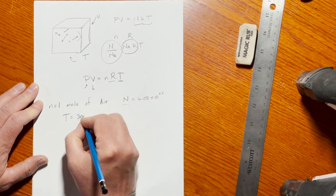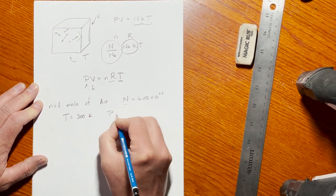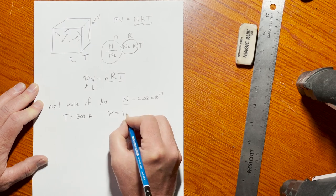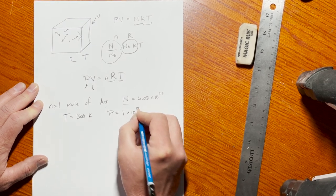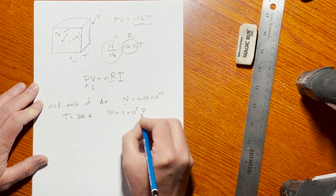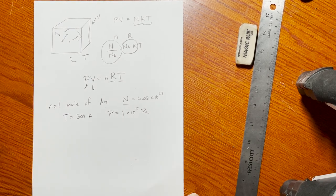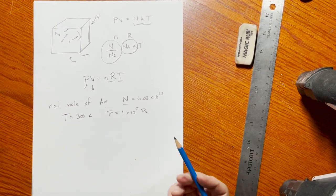And room pressure, we'll call that one pascal—which is 1 times 10^5—sorry, one atmosphere, which is 1 times 10^5 pascals. The question is, what is the volume of air at that pressure and temperature?